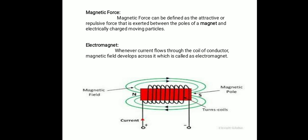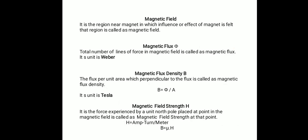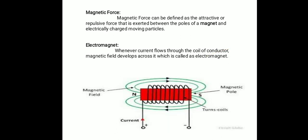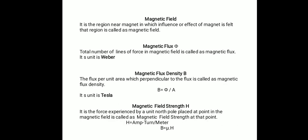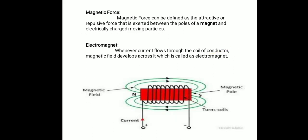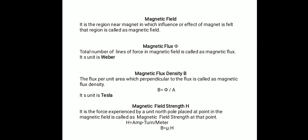Magnetic flux (φ): the total number of lines of force in a magnetic field is called the magnetic flux. You can see in the diagram four lines above the magnet and four lines below the magnet — this total number of lines of flux is called magnetic flux. Its notation is φ and its unit is weber.